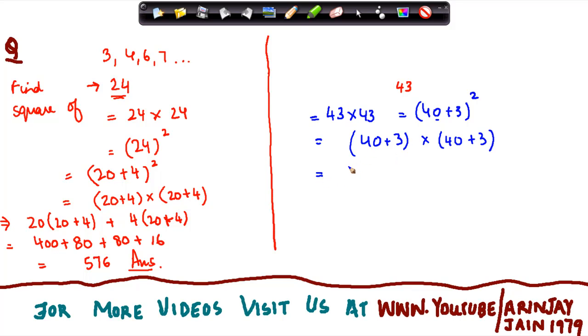So 40 into 40, this can be written as 40 into 40 plus 3 plus 3 into 40 plus 3. What did I achieve here is that I have split this into two parts, some of which contain zeros which makes the multiplication easier.